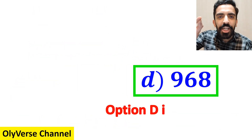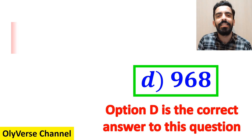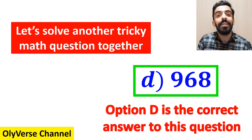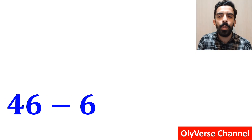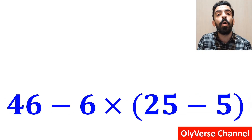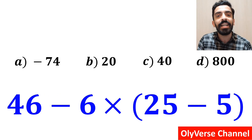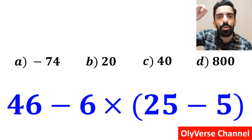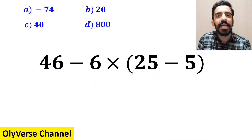Option D, 968, is the correct answer to this question. Now let's solve another tricky math question together. What is the value of the expression 46 minus 6 times open parenthesis 25 minus 5 close parenthesis? Which option do you think is the correct answer? Let's dive in and break it down step by step together.